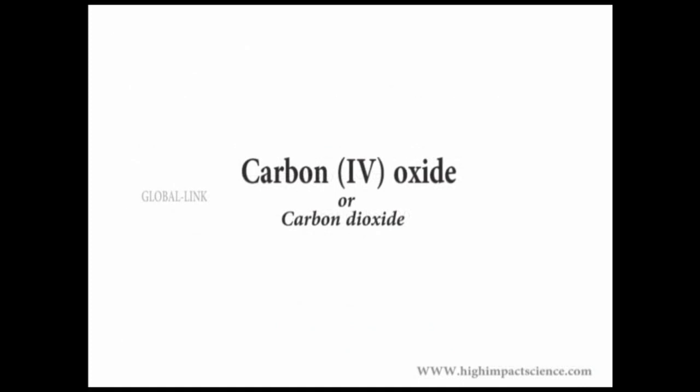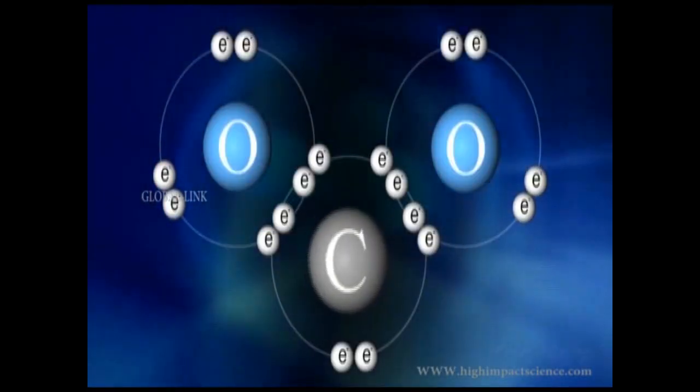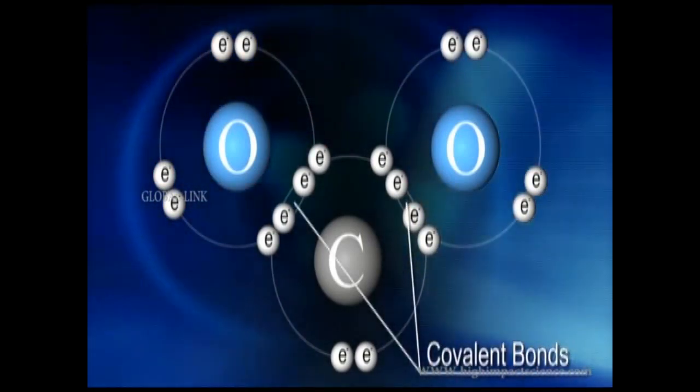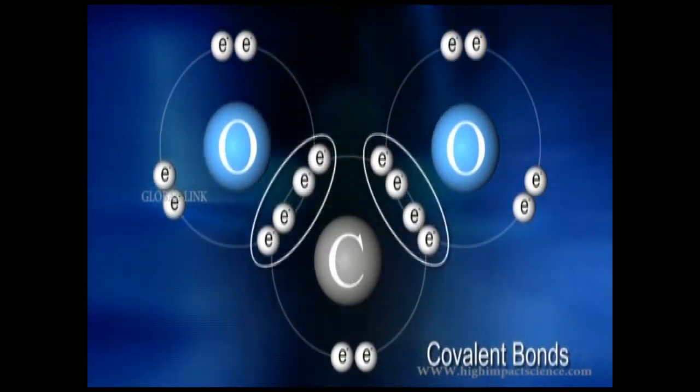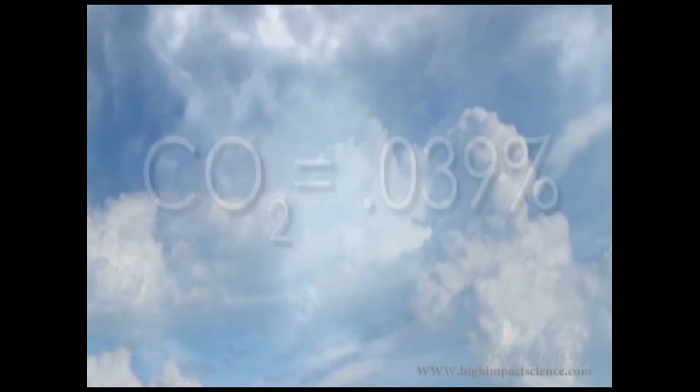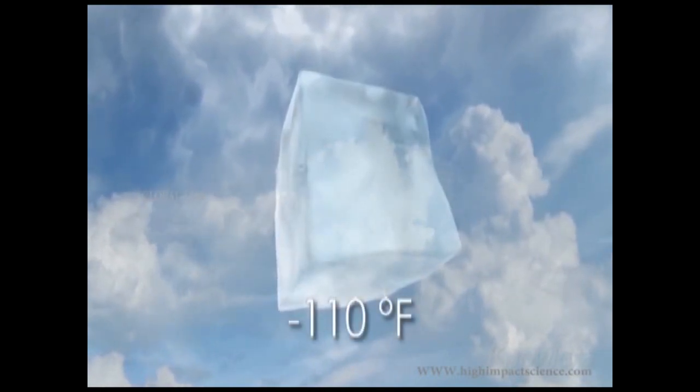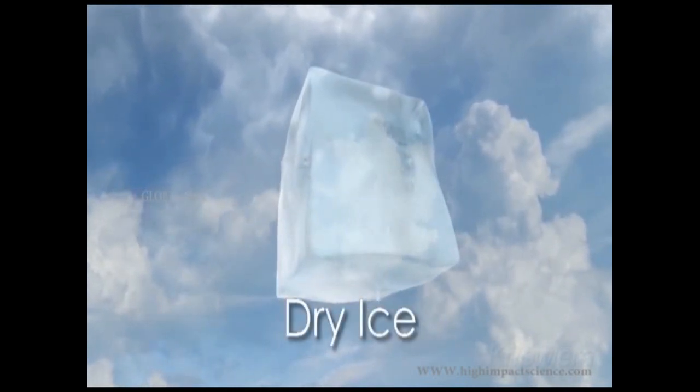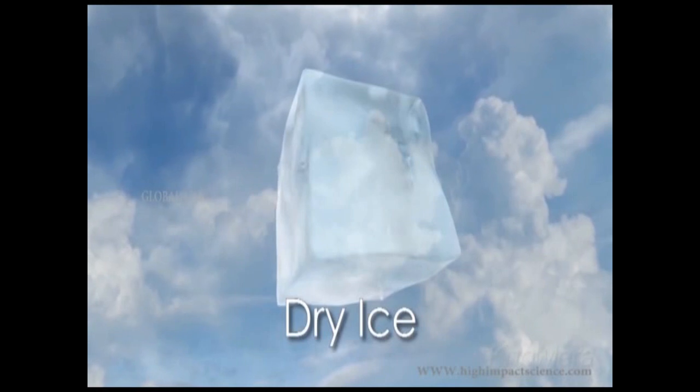Carbon-4 oxide or carbon dioxide is the most stable oxide of carbon and is found as a colorless, odorless gas. It is made up of three atoms: one carbon and two oxygen atoms held together by covalent bonds, which means the electrons are shared between the atoms. Carbon-4 oxide makes up 0.39% of our atmosphere and freezes at about negative 110 degrees Fahrenheit. Frozen carbon-4 oxide is called dry ice.